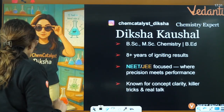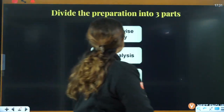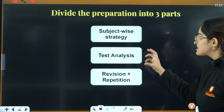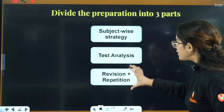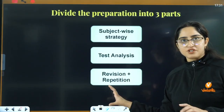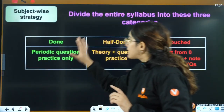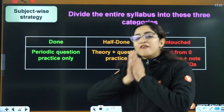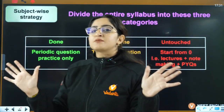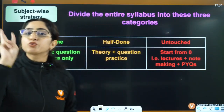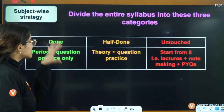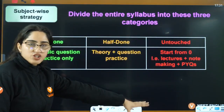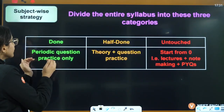Let's talk about the three parts of this strategy: first is subject-wise strategy, then test analysis, and third is revision and repetition. For subject-wise strategy, divide every single subject into three parts: done, half-done, and untouched.